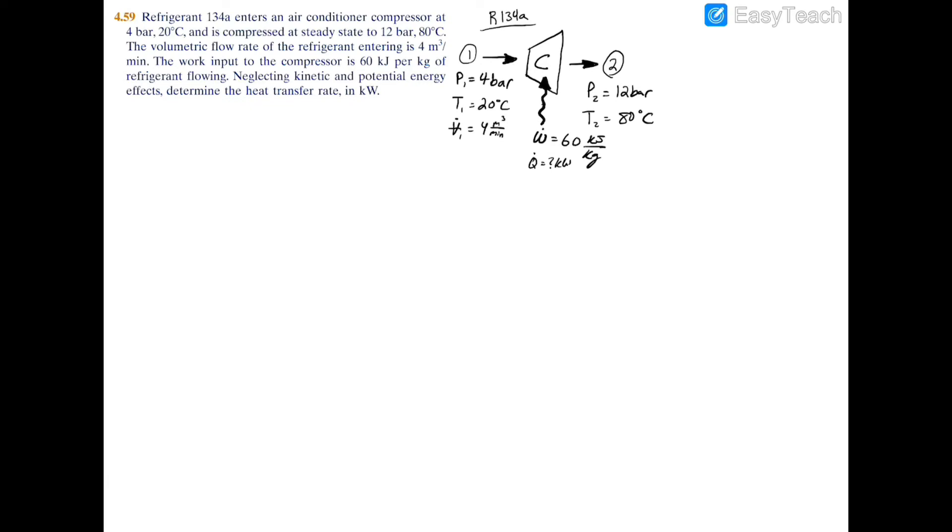In this example we have R-134a entering into an air compressor at inlet 1. We have the pressure, temperature, and volumetric flow rate, and then exiting at exit 2. We have a pressure and temperature given in the problem statement. We're also told that we have work on a per unit mass basis, so 60 kilojoules per kilogram is the work here.